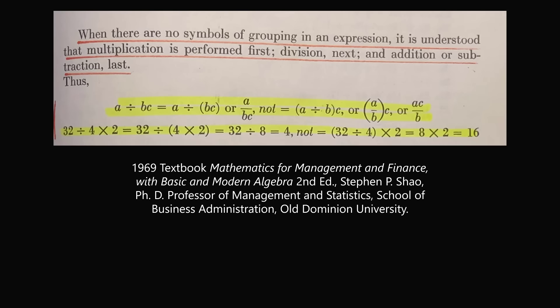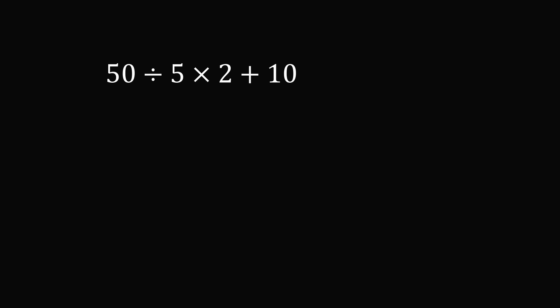So this is actual proof that some people may have learned a different rule. So what would the answer be if you followed this rule? You would want to do multiplication before division. So you would definitely group 5 times 2 and evaluate that to be 10. You would then do the division, 50 divided by 10, which would be equal to 5. And then you have 5 plus 10, which is equal to 15.